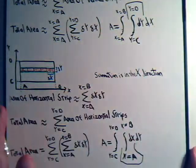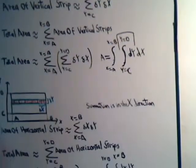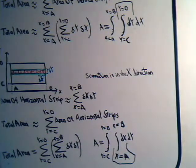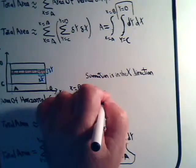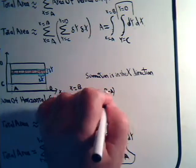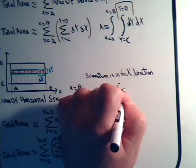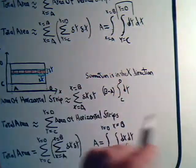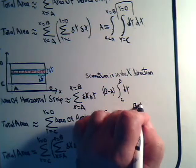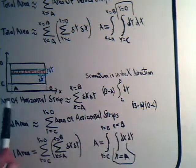If the integral is in the dy dx form, you know you're dealing with vertical strips. To evaluate this dx dy double integral, start with the innermost integral of dx from a to b, giving b minus a. Then integrate dy from c to d, giving d minus c. So the double integral equals (b minus a) times (d minus c), confirming the area of this simple rectangle.